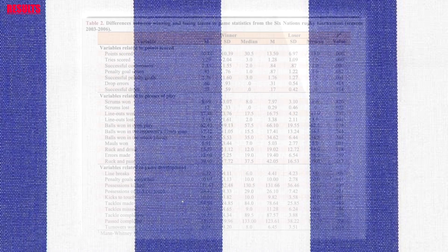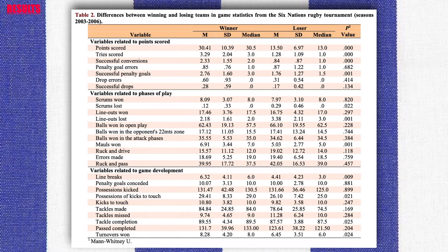The average values, standard deviations, and medians of the values of the variables studied between winning and losing teams are demonstrated in the table. For the first group of variables, points scored, winning teams had averages that were significantly higher for the following variables: points, tries, conversions and successful drops. Winning teams also had higher averages for the rest of the variables, however no significant differences were found.